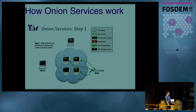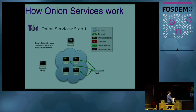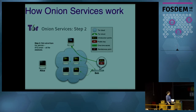Interesting properties of onion services: they are self-authenticated, end-to-end encrypted, and provide NAT hole-punching. Many people use them just for SSH to limit attack surface and for censorship resistance. How it works: Bob, as an onion service, picks three introduction points — which are just relays, chosen randomly — and tells the hidden service directory, a relay that's been in the network for at least 96 hours, 'here is my descriptor, here is how to reach me, these are the nodes I picked.'